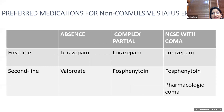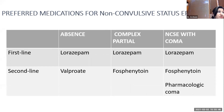For non-convulsive status epilepticus, benzodiazepines are again the first-line agent. For absence seizures, valproic acid can be given as a second-line agent. For complex partial seizures, fosphenytoin or phenytoin are preferable. For non-convulsive status epilepticus, fosphenytoin or pharmacologic coma can be initiated.